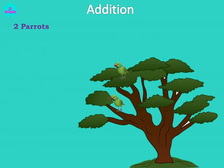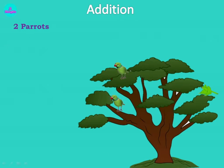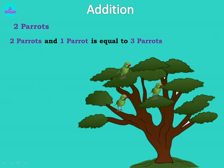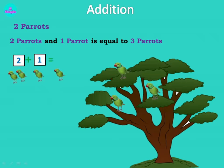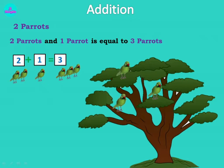Now let's see one more example. How many parrots are there on the tree? One and one — that is two. Two parrots are there on the tree. Now one more flies in. So two parrots and one parrot is equals to one, two, three — three parrots. So how will we write that? Two parrots plus one — how many flew in? One — is equals to one, two, three. So two plus one is equals to three.